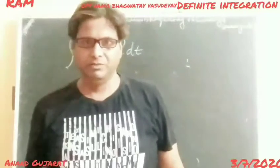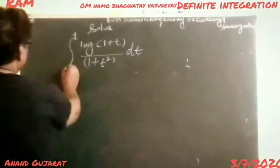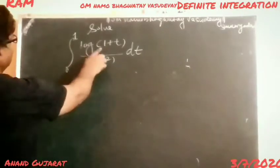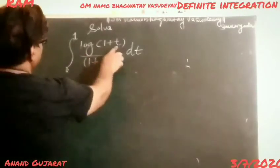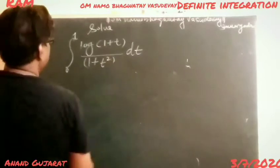Today in definite integration, we have a problem where the numerator involves the integral from 0 to 1 of log(1 + t) upon (1 + t²) dt.